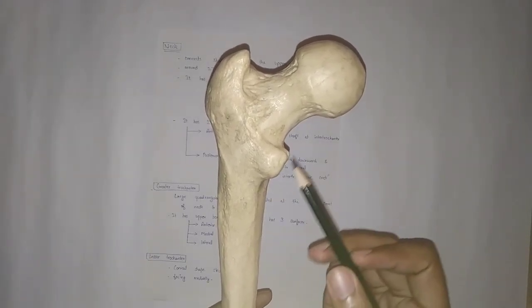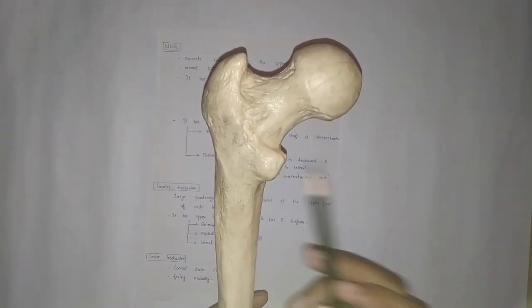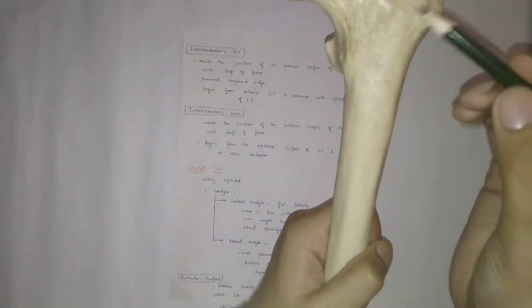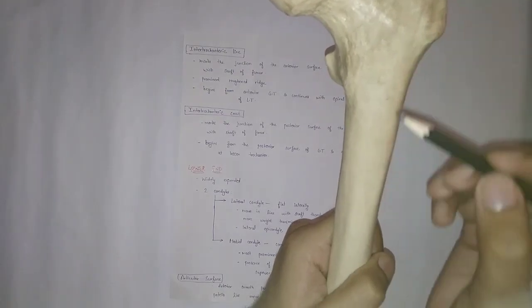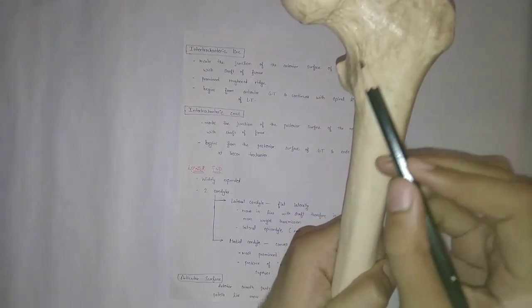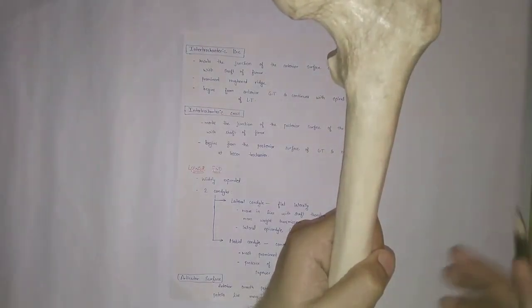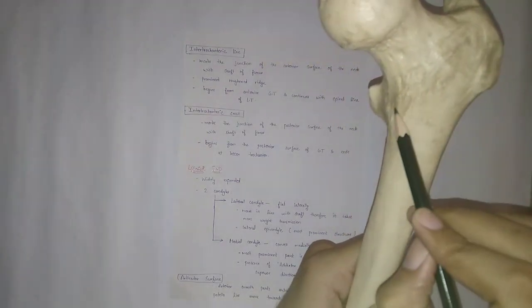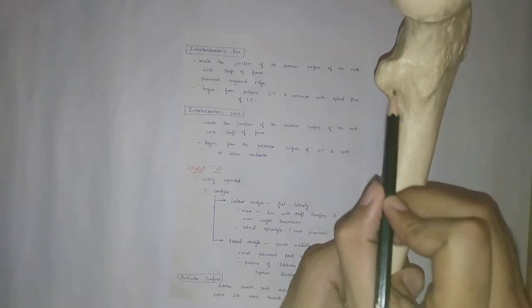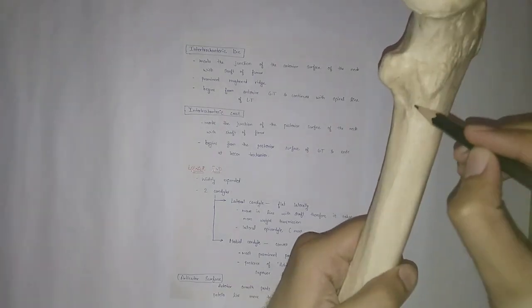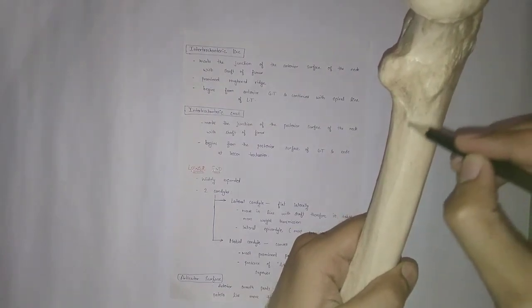The lesser trochanter is conical in shape, posteriorly present with a medial face. After the lesser trochanter, the next part is the intertrochanteric line, which is the junction of the neck and shaft. This prominent ridge is the intertrochanteric line. It starts from the greater trochanter and goes down to merge with the spiral line at the lesser trochanter.